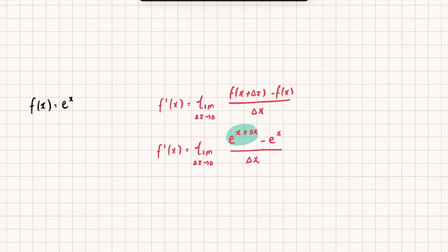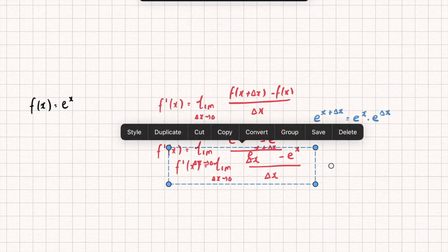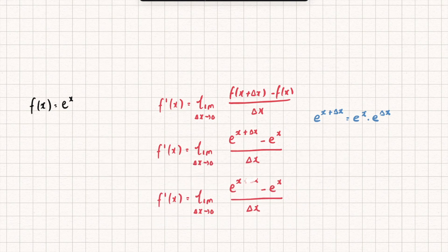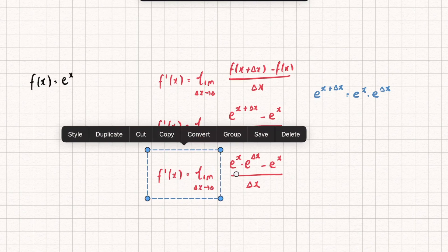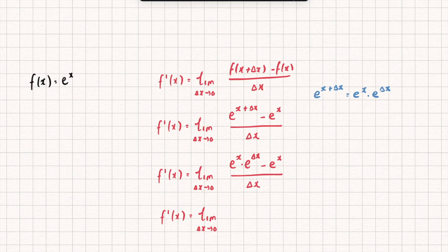The first thing to notice is that e to the (x + delta x) can be rewritten as eˣ multiplied by e to the delta x, since the bases are the same and we sum the exponents. Substituting that in, we can then factorize eˣ out of the numerator, giving us: eˣ multiplied by (e to the delta x minus 1), all over delta x.